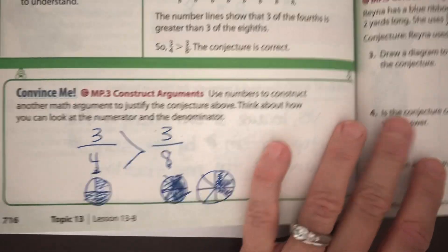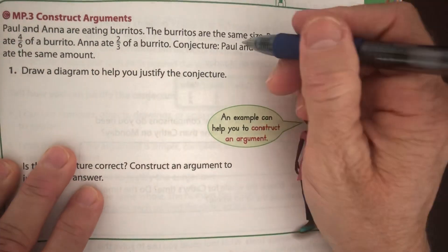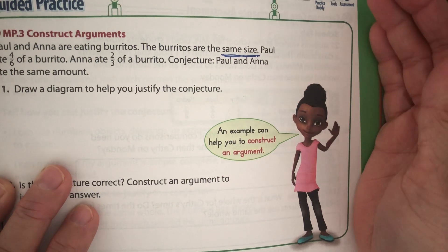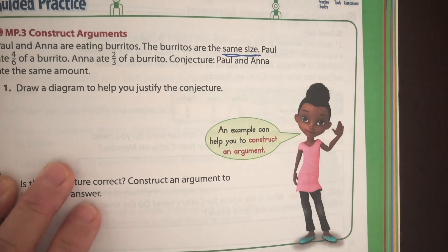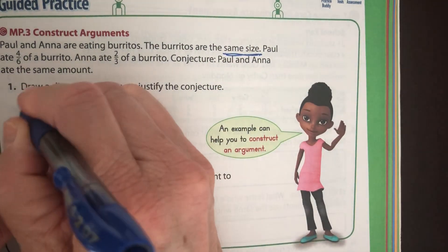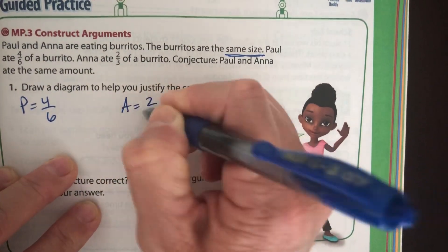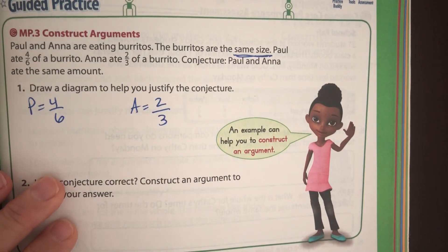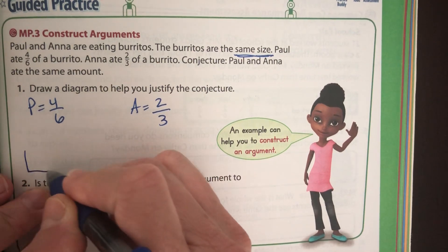Paul and Anna are eating burritos. The burritos are the same size — super important. If one has a child's burrito and one has a party-sized burrito and they each ate half, that's a different amount. Paul ate four-sixths of a burrito and Anna ate two-thirds. We're going to draw a diagram — I'll use burritos. This is my big burrito, and they need to be the same size.